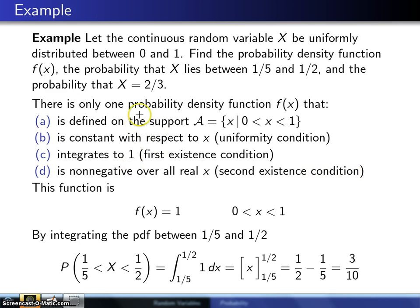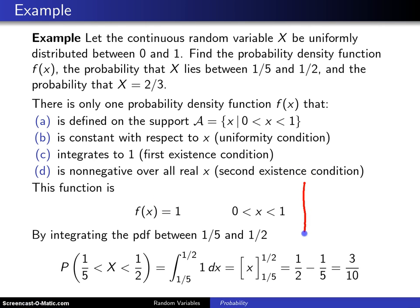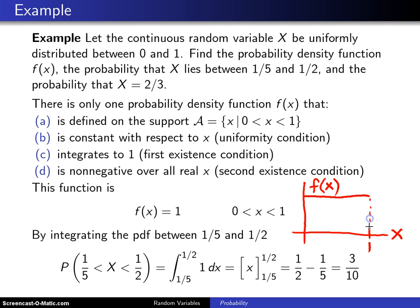Based on those four criteria, the probability density function has to be f of x equals 1 for x values between 0 and 1. So, the probability density function for a continuous, uniformly distributed random variable between 0 and 1 looks just like that.